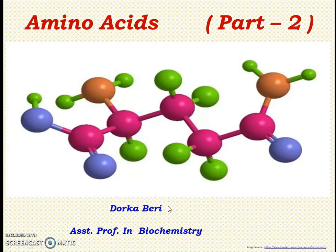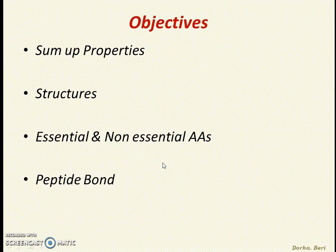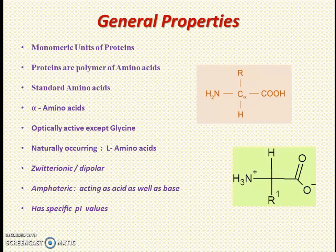Hi friends, today let's have a glance at the second part of amino acids. In my first video we learnt the definition of amino acids, the names of the 20 standard amino acids, and classification based on the side chain. In this class we will concentrate more on the structures, also learn essential and non-essential amino acids, how they are divided, and we will also learn peptide bond formation.